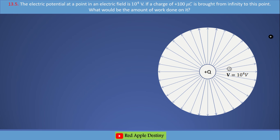Now the numerical: the electric potential at a point in an electric field is 10 to the power 4 volts. If a charge of 100 microcoulombs is brought from infinity to this point, what would be the amount of work done on it?